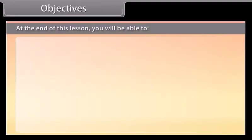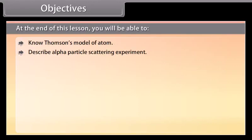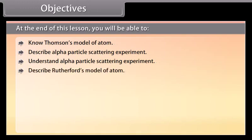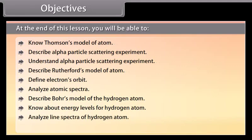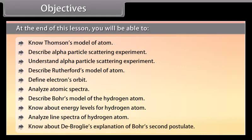At the end of this lesson you'll be able to know Thomson's model of atom, describe alpha particle scattering experiment, understand alpha particle scattering experiment, describe Rutherford's model of atom, define electron orbits, analyze atomic spectra, describe Bohr's model of the hydrogen atom, know about energy levels of hydrogen atom, analyze line spectra of hydrogen atom, know about de Broglie's explanation of Bohr's second postulate.